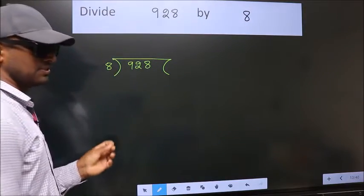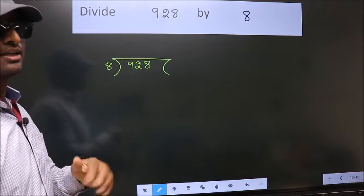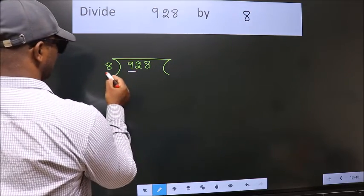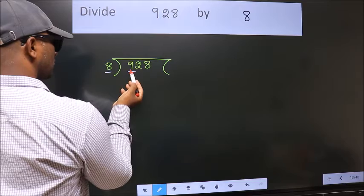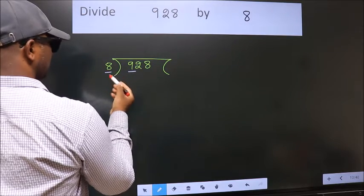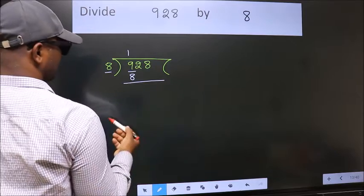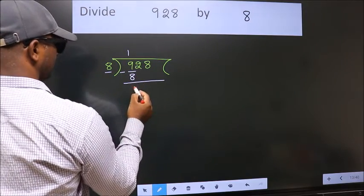This is your step 1. Next, here we have 9, here 8. A number close to 9 in 8 table is 8 once 8. Now we should subtract. We get 1.